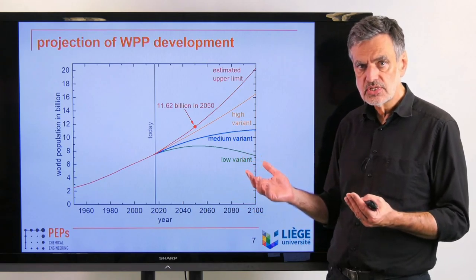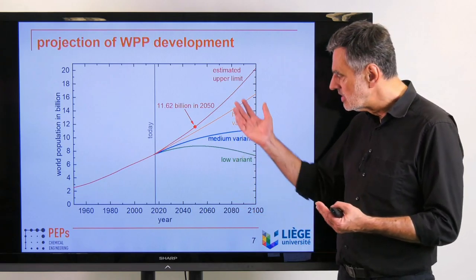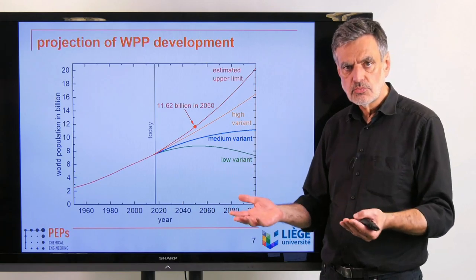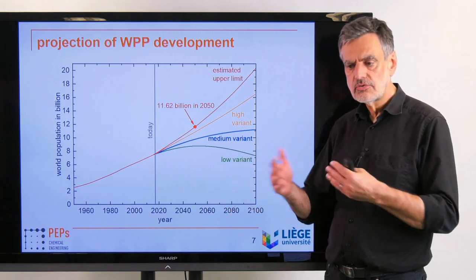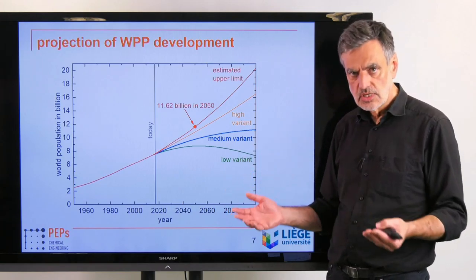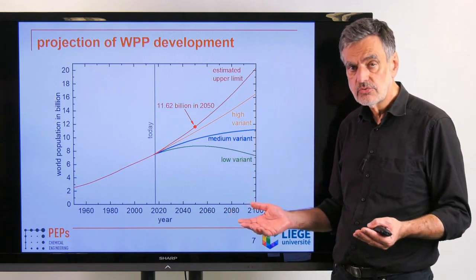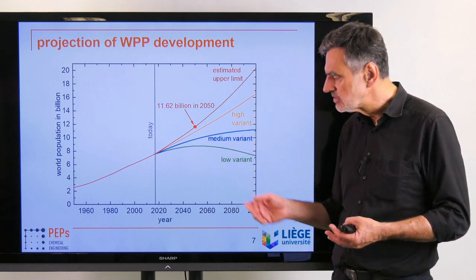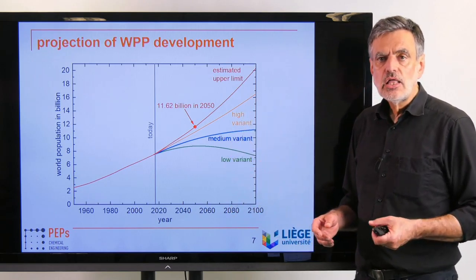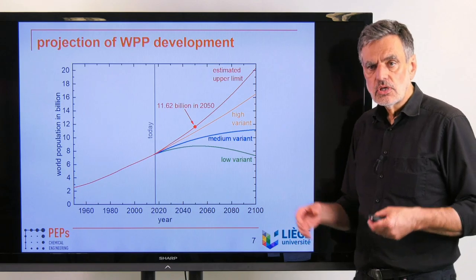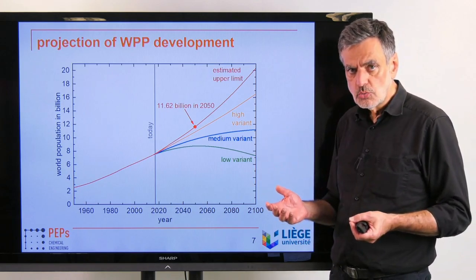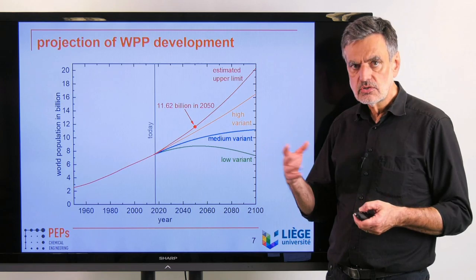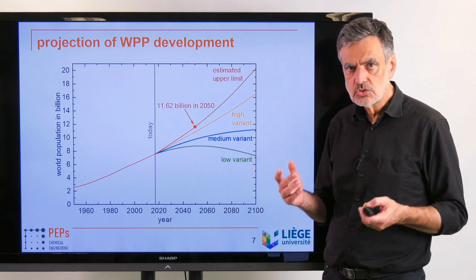If we plot that value of 11.6 billion in the previous diagram with the corresponding curve, we can see that it will reach a value even above the high variant — which I just said is already regarded as being rather unlikely to occur. The question is: how can we understand that the United Nations says the medium variant is most likely, yet by this meta-study we reach that higher value?